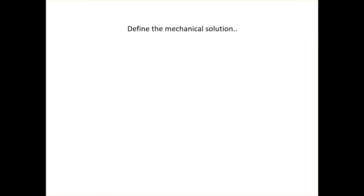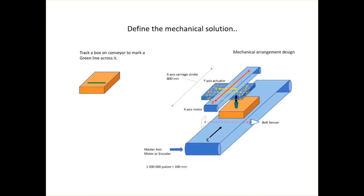By way of understanding how we implement a CAM solution, let's define a mechanical solution to a problem. The problem is a box upon which we wish to deposit a green line of something. The box travels along a conveyor and the green line needs to be perpendicular to the travel of the box. We can define a mechanical arrangement to provide the solution and to be able to build our software program and configuration.